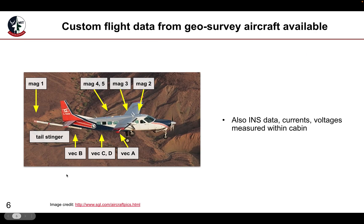The package contains a unique open source flight data set that was collected using a geosurvey aircraft by Sanders Geophysics in Ottawa, Canada. Flights were performed at different altitudes with a variety of different maneuvers. Five scalar magnetometers are included, which have different levels of noise based on their placement in the aircraft. Four vector magnetometers are also included, along with inertial navigation system data, current and voltage measurements, and other auxiliary data.